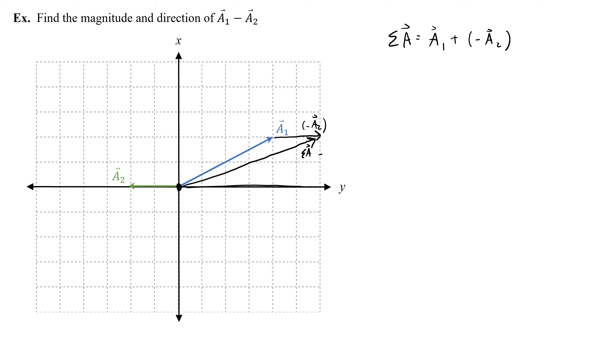This will have two components, sigma ax and sigma ay. Ax is 1, 2, 3, 4, 5, 6. So the angle tangent inverse of the y component 2 over the x, 2 over 6. That gives me 18.4 degrees.